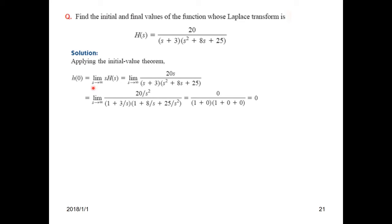For the initial condition, we use the formula h(0) = limit as s tends to infinity of sH(s). We multiply by s, then divide both sides by s² to get the function in this form. Now we can put the value of infinity, which becomes 0. Similarly, other terms also become 0, so h(0) equals 0.